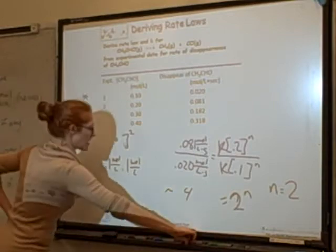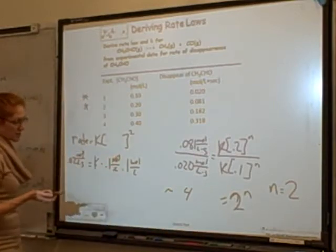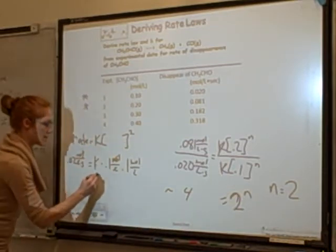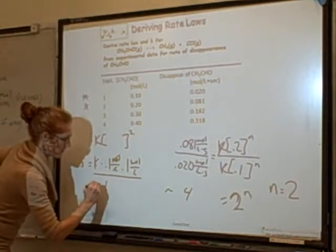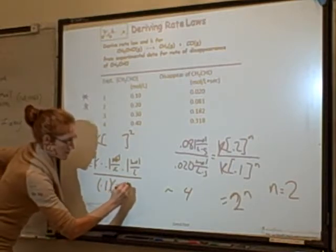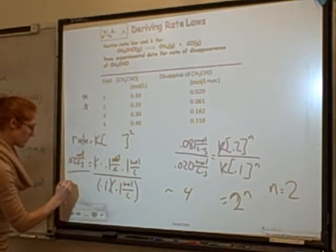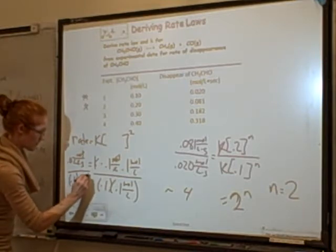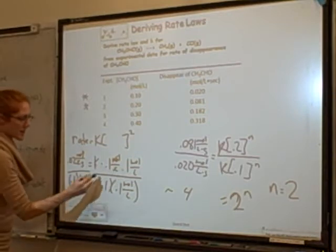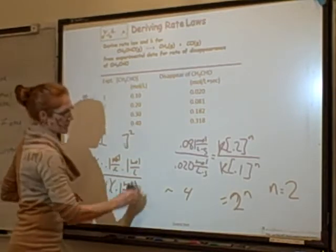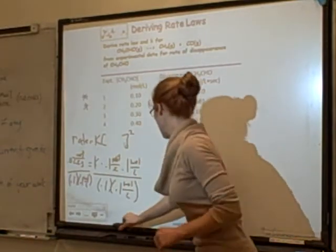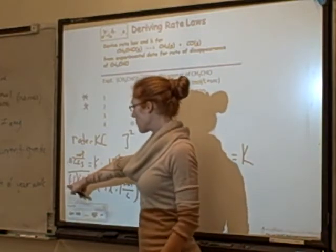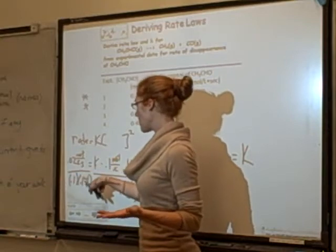Let's divide both sides — first by 0.1 moles per liter, which cancels one of those, and then divide this side by 0.1 and by 0.1 moles per liter again. That leaves only k on one side. So k equals 0.02 divided by 0.1, which gives 0.2, divided by 0.1 again, which gives 2.